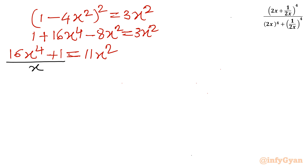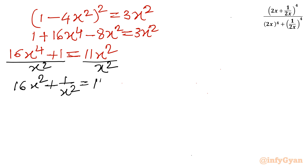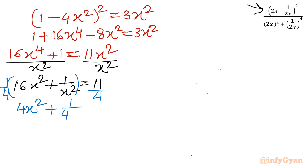Dividing both sides by x² (noting x is non-zero): 16x² + 1/x² = 11. To work with 2x + 1/(2x), we divide this equation by 4, giving 4x² + 1/(4x²) = 11/4.